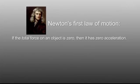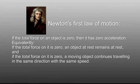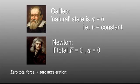Equivalently, if the total force on it is zero, an object at rest remains at rest; and if the total force is zero, a moving object continues traveling in the same direction with the same speed. There's more about these laws on our resource sites. For now, remember: zero total force gives zero acceleration, and zero acceleration means the velocity is constant.